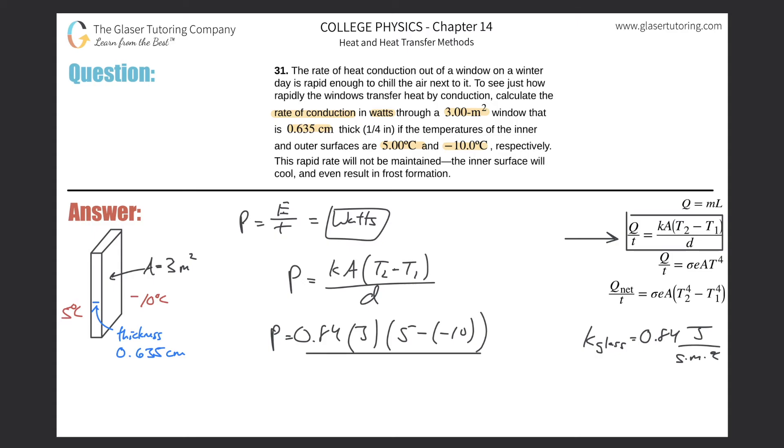The distance here, we got to convert that into meters. So it's 0.635 over 100. So 0.84 times three times 15 divided by 0.635 divided by 100. We get a value of about 5.95 times 10 to the third watts.